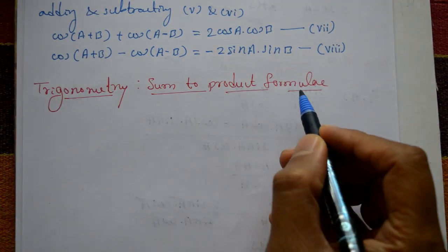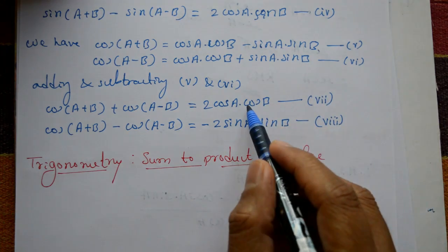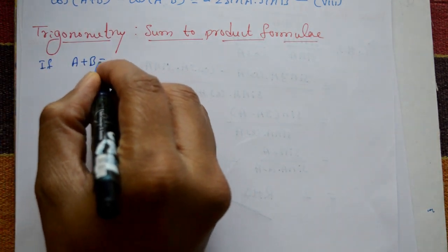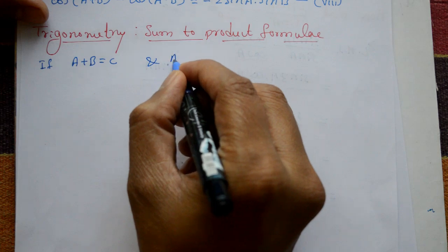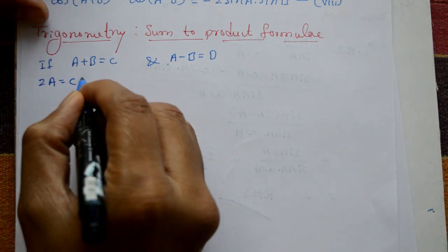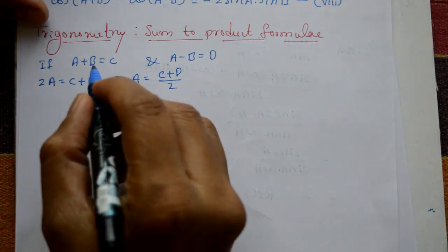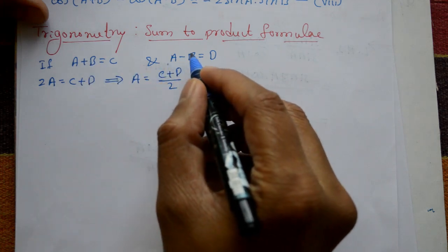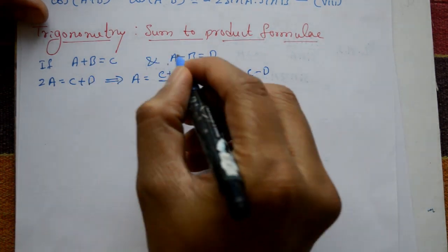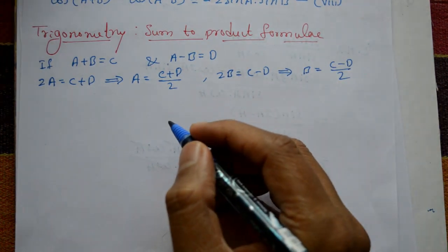Trigonometry sum-to-product formulae. Taking equations three, four, seven, and eight: let a + b = C and a − b = D. Adding these two gives 2a = C + D, so a = (C + D)/2. Subtracting gives 2b = C − D, so b = (C − D)/2.